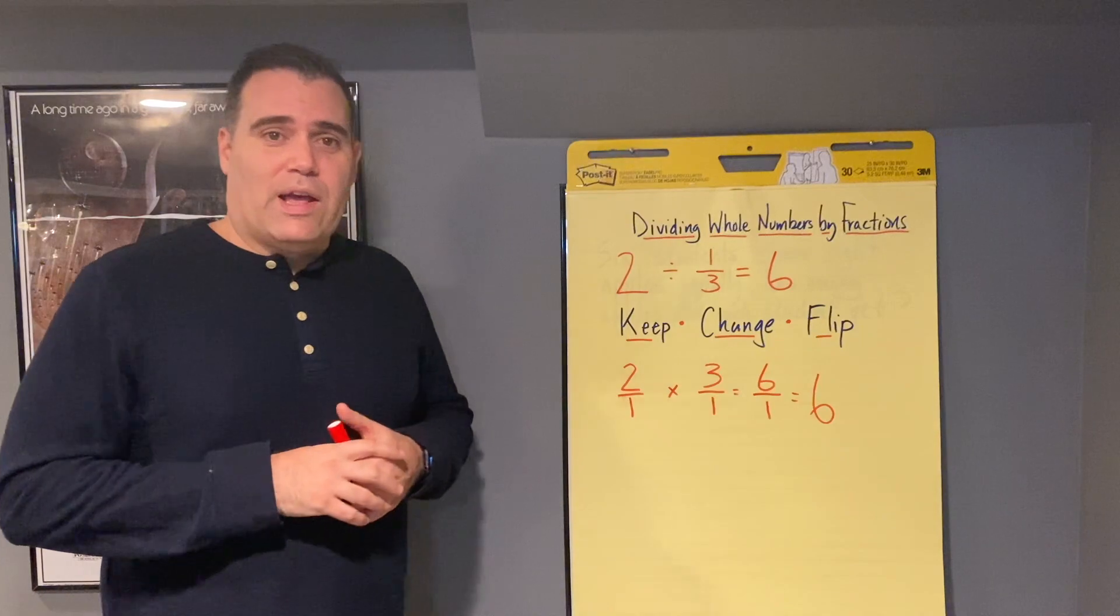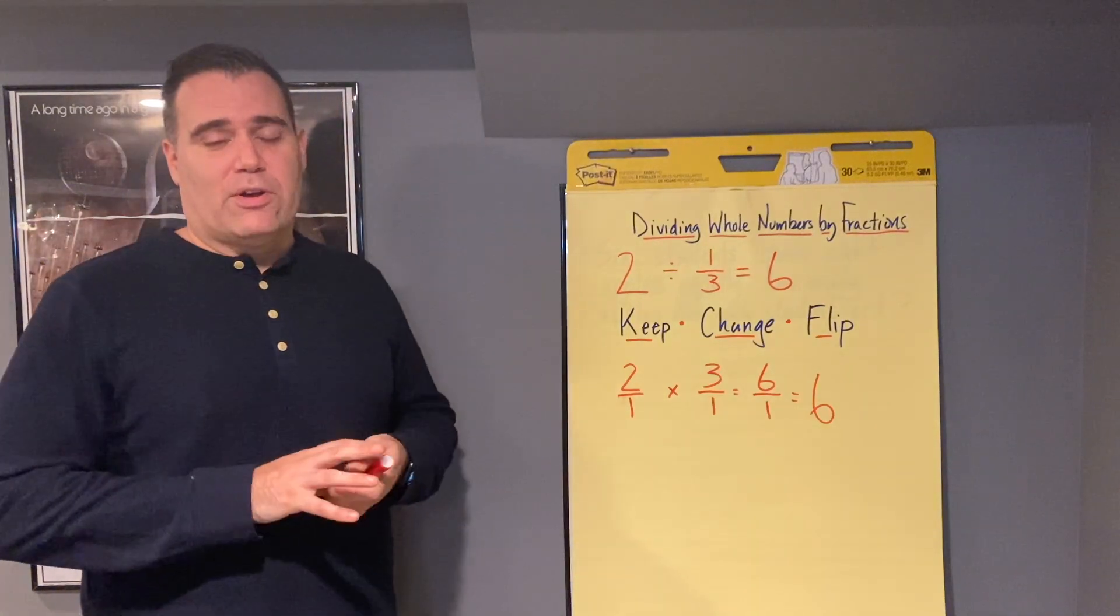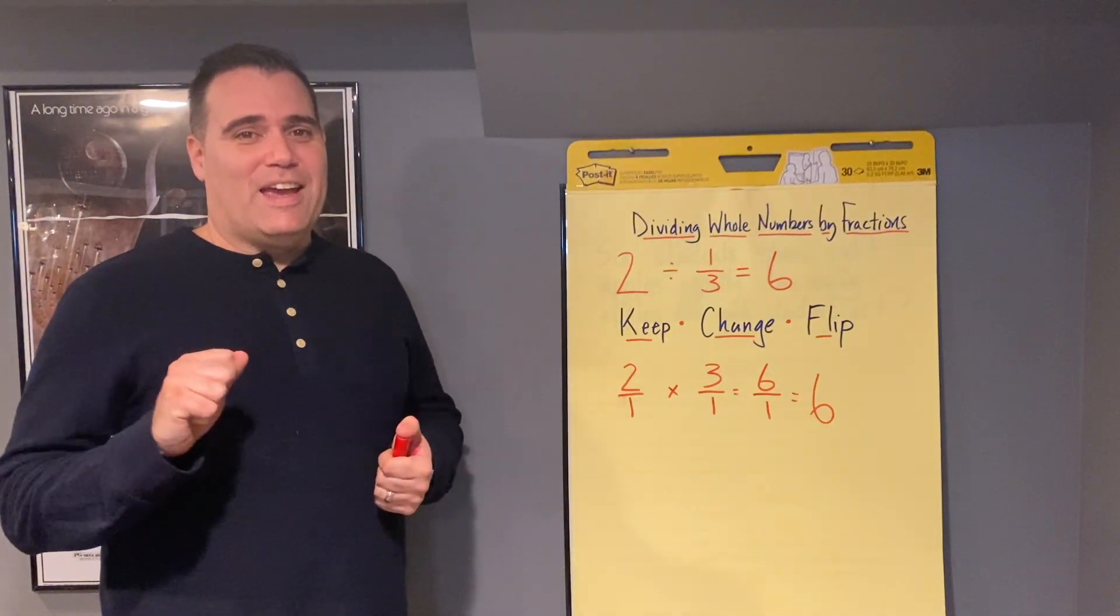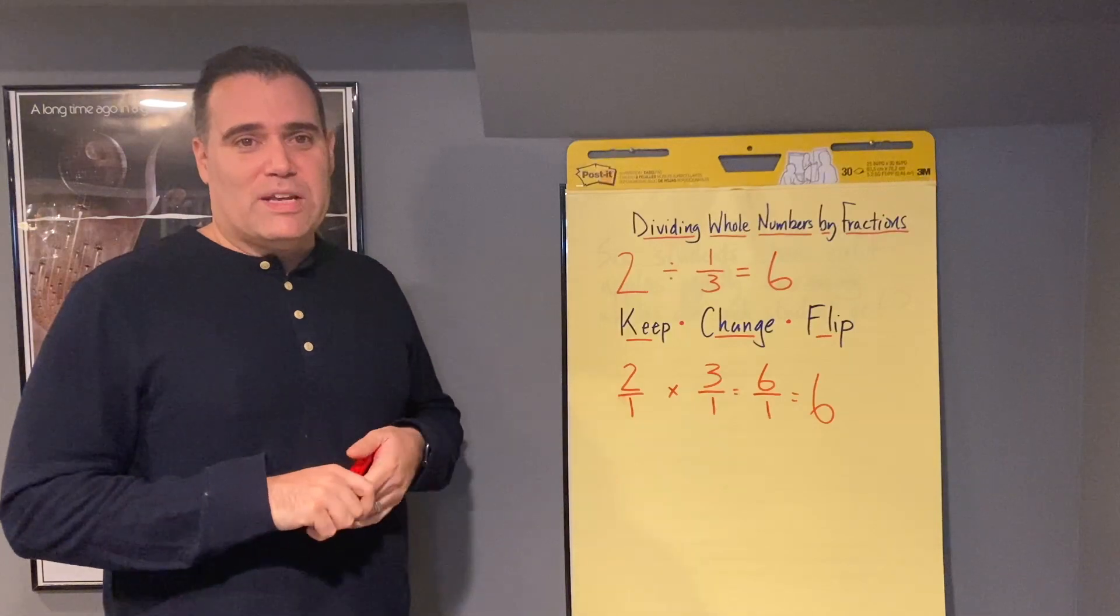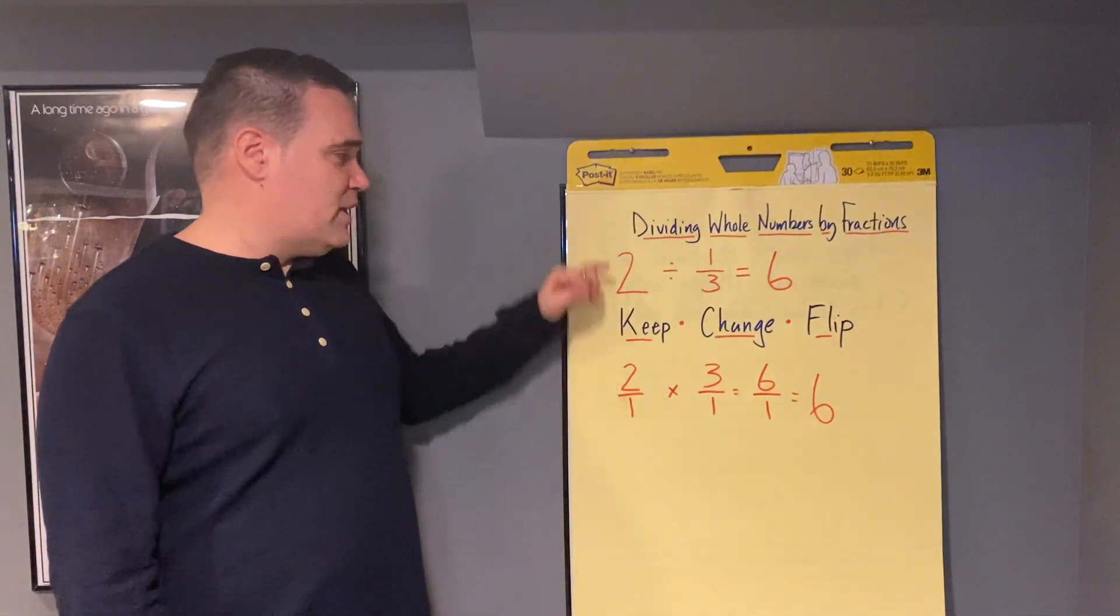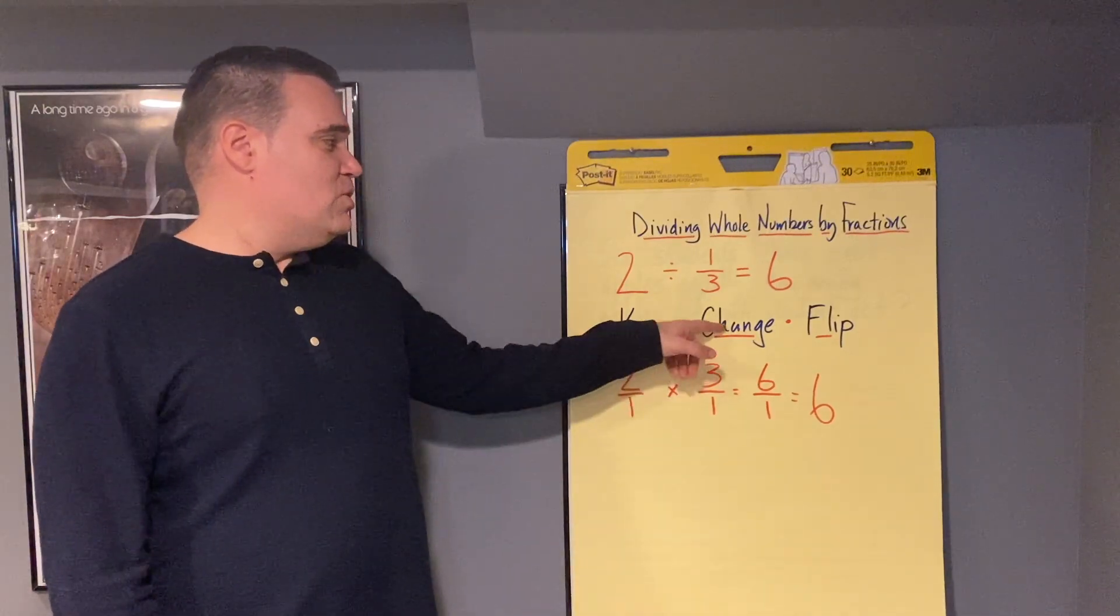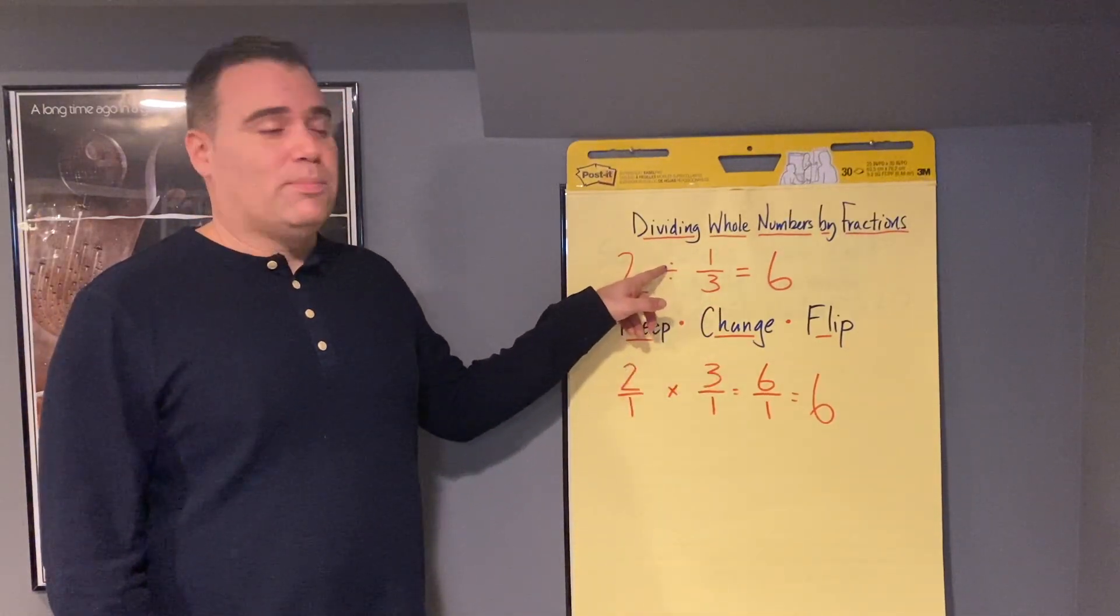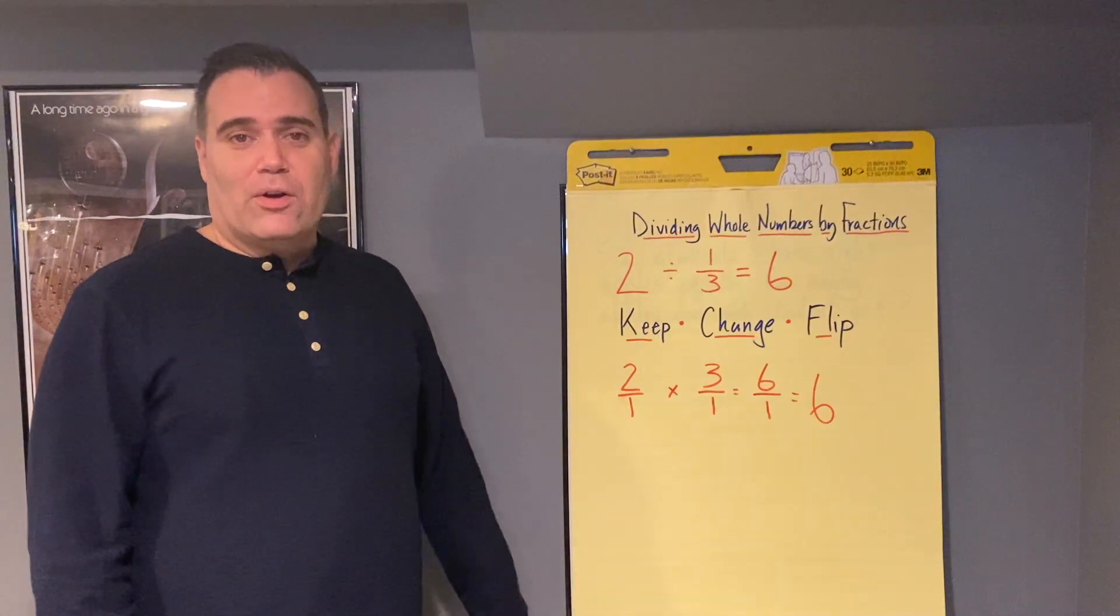But what I'm going to do now, you're going to have a few problems that are going to pop up on the screen, and you are going to try those independently on your own. So remember, keep, change, flip. You keep the first number as is. You change the division sign to multiplication, and then you flip the second number.